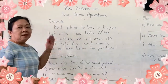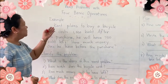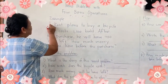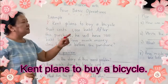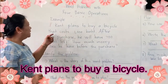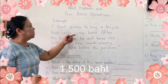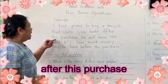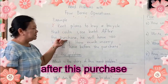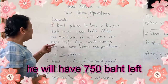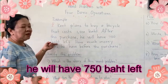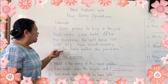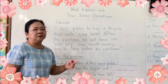Here is an example. Kemp is a boy who plans to buy a bicycle that costs 1,500 baht. After this purchase, he will have 750 baht left. How much money does he have before the purchase?